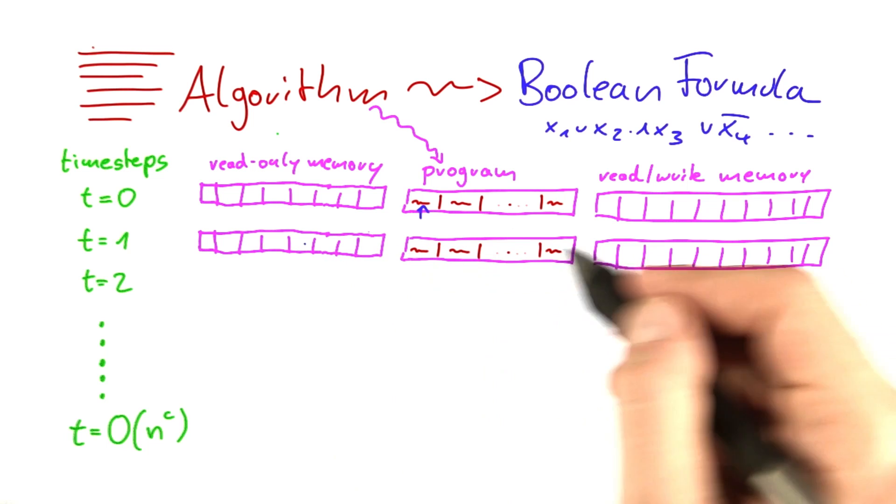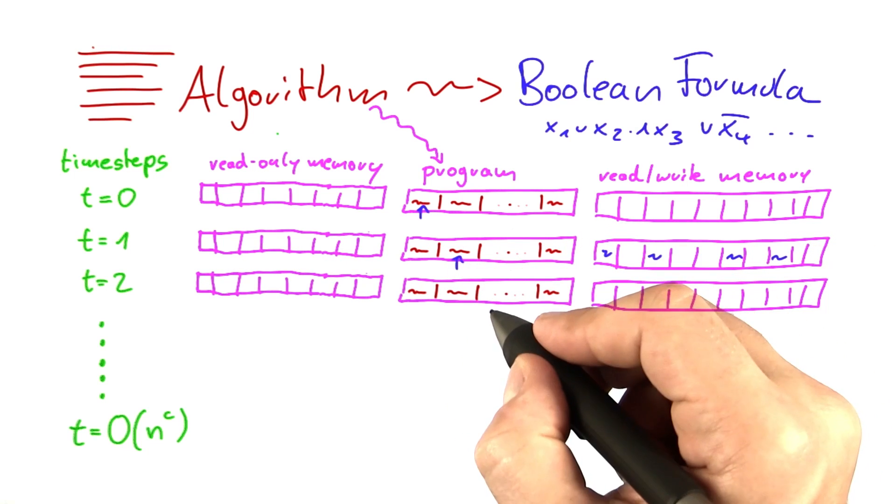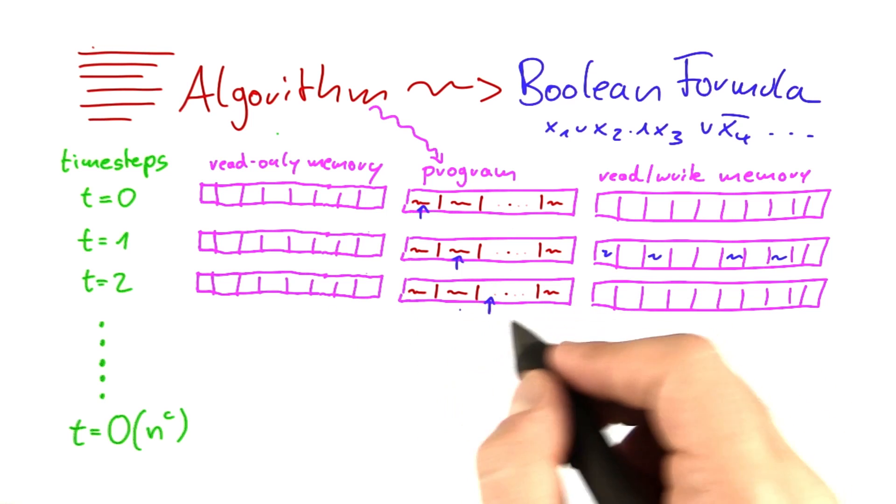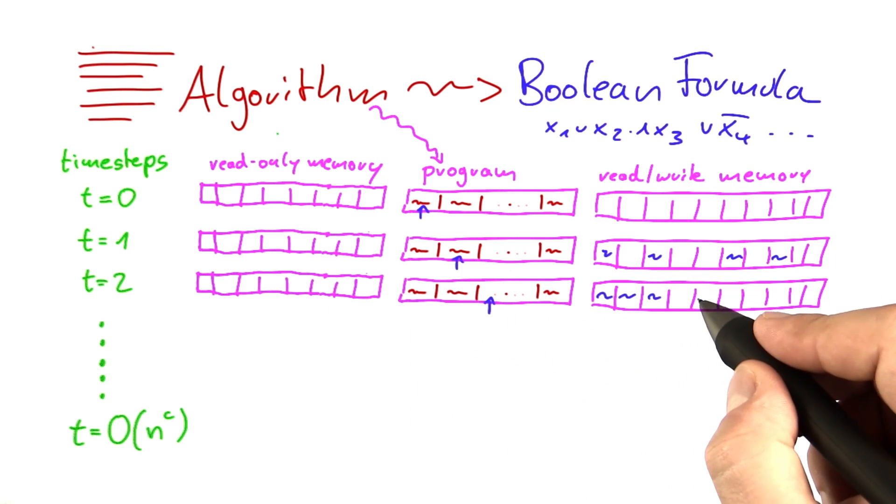But as the algorithm works, it will also put some content in here. And then, of course, the program moves on. Maybe it can also jump back and forth here. And of course, we will have more and more content in the memory.